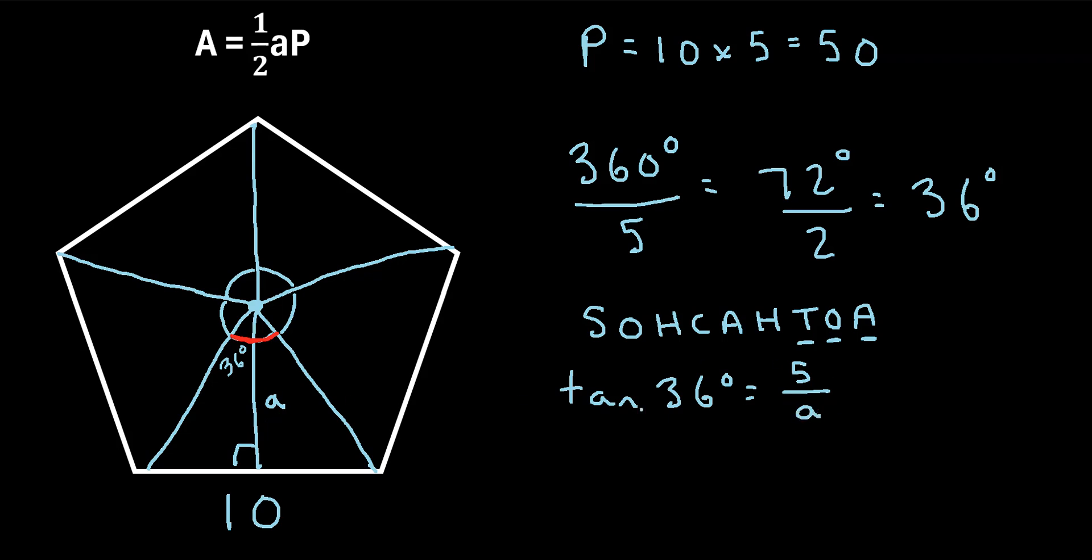So we'll write an A. So we can easily solve for A. If we multiply both sides by A, we'll get A times the tangent of 36 degrees is equal to five. And then if we divide both sides by the tangent of 36 degrees, we'll find that A is equal to five divided by the tangent of 36 degrees. Now, if you punch this into a calculator, you'll get about 6.88.